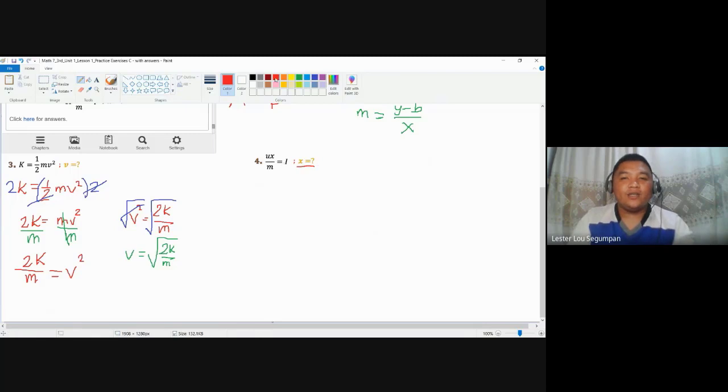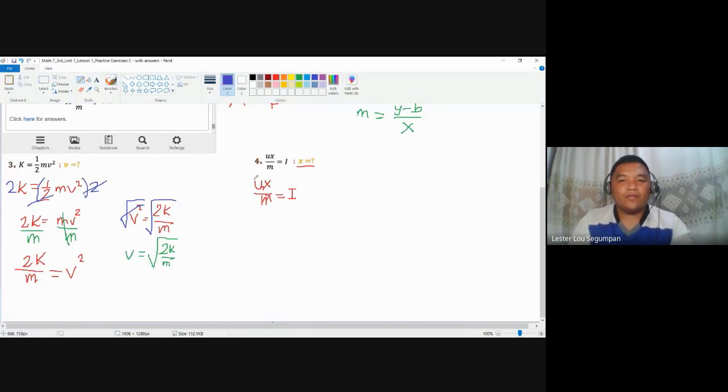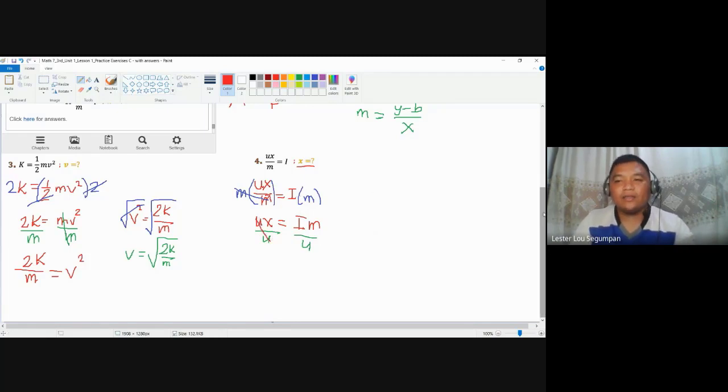This is actually a formula you could message to your ex - your past relationship. The result here for X would be your message to your past relationship. You have UX over M equals I. We are going to solve for X. Let's remove this first - the fractional forms were removed first. To remove that M at the bottom, multiply M both sides, cancel that out. You will have UX equals IM. Finally, to solve for X, divide both sides by U.